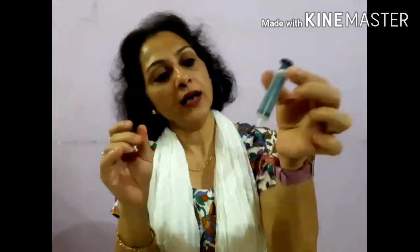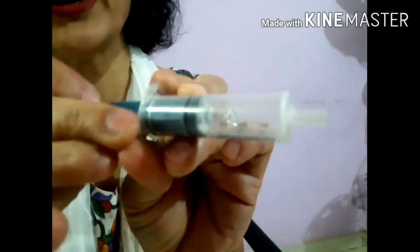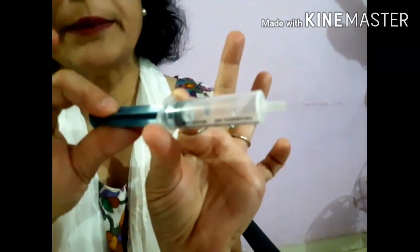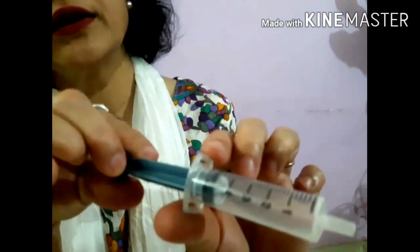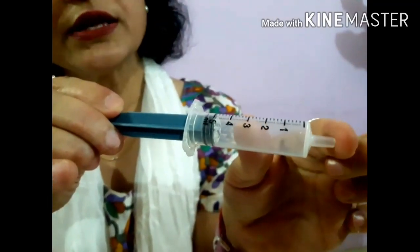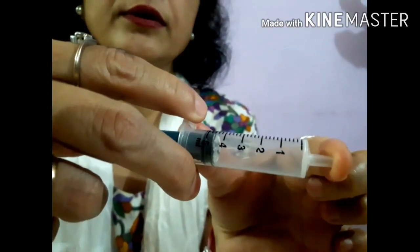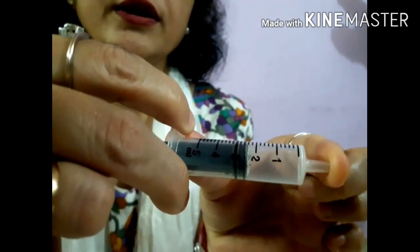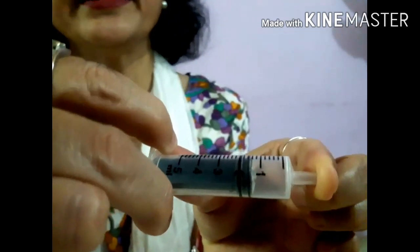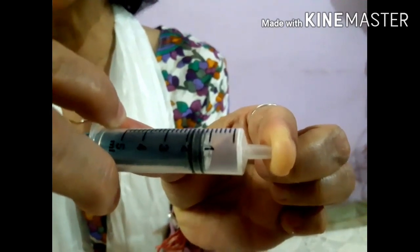The third property is that air can be compressed. You have all seen this syringe. It has a nozzle through which air can pass in. As I pull it, air is entering inside. I have pulled the piston to maximum. Now I will block this nozzle tightly and push the piston. You can see it is being moved. I am pressing hard and it has moved to a very small reading. This means that air can be compressed to a small volume.